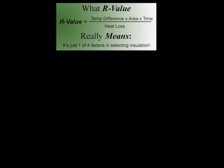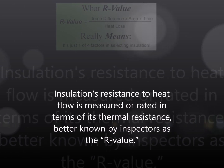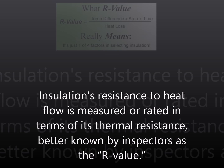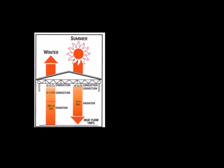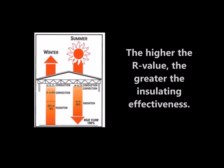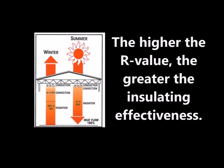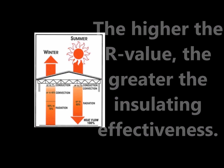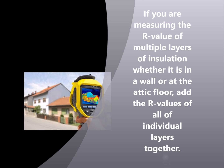Insulation's resistance to heat flow is measured or rated in terms of its thermal resistance, better known by inspectors as the R-value. The R-value is an indicator of insulation's resistance to heat flow — the higher the R-value, the greater the insulating effectiveness. The R-value depends on the type of insulation, which includes its material, thickness, and density. If you are measuring the R-value of multiple layers of insulation, whether in a wall or at the attic floor, add the R-values of all the individual layers together. The installation of additional insulation increases the R-value and the resistance to heat flow. The effectiveness of the insulation's resistance to heat flow also depends on how and where the insulation is installed.